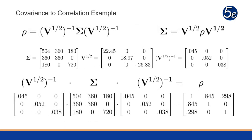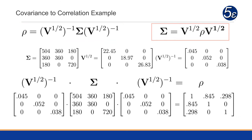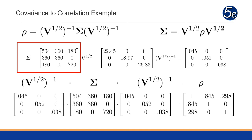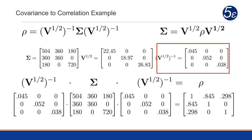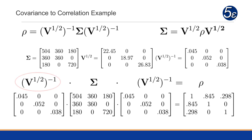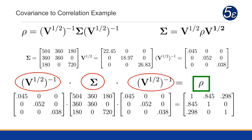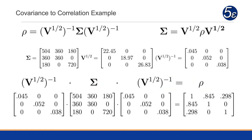Here's a worked example computed completely. The formula for the correlation matrix and the covariance matrix are shown. Given a covariance matrix of [504, 360, 180; 360, 360, 0; 180, 0, 720], we compute the standard deviation matrix by zeroing all entries except the diagonals and taking the square root of those diagonal entries. We then compute an inverse using the solve function in R, and multiply the inverse standard deviation matrix by the covariance matrix by the inverse standard deviation matrix to obtain the correlation matrix. The diagonals should be 1 and all other entries between negative 1 and positive 1.